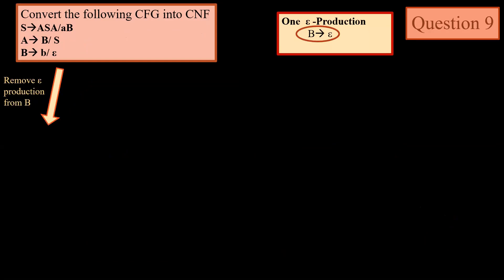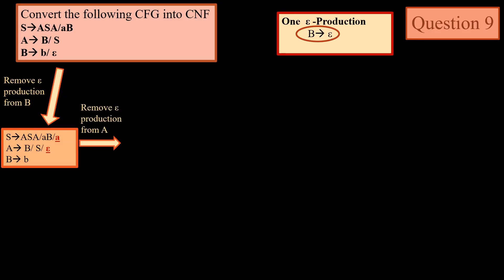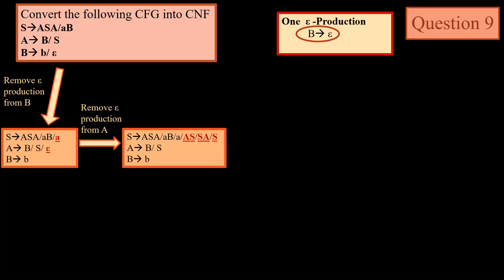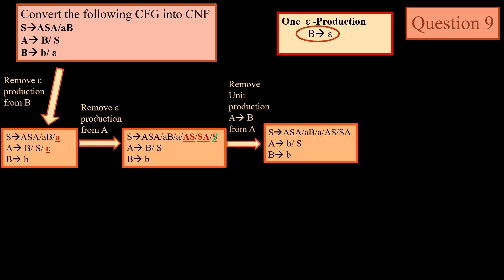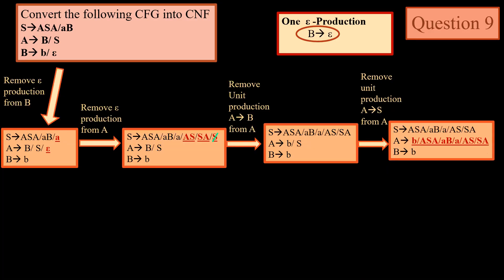Next we have only one epsilon production: B → b. We remove it. Once removed, we have S → a. Since A → B, epsilon is introduced in the production of A. We remove that epsilon and corresponding to S we get three new productions: SA and S. We remove the unit production A → B from A. Before that we first remove the duplicate S → S, a self unit production. Then after removing the unit production A → B, we remove the unit production A → S from A — whatever was on the right side of S has been replaced corresponding to A → S.